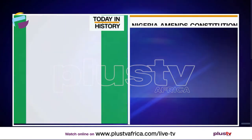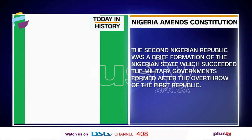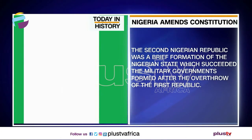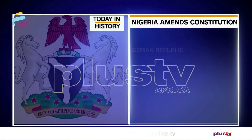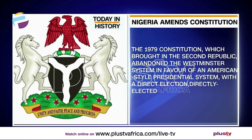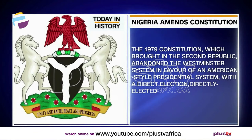The Second Nigerian Republic was a brief formation of the Nigerian state which succeeded after military governments. After the overthrow of the First Republic, the 1979 constitution brought in the Second Republic, abandoning what was called the Westminster system in favor of an American-style presidential system with a direct election system that was eventually brought in.